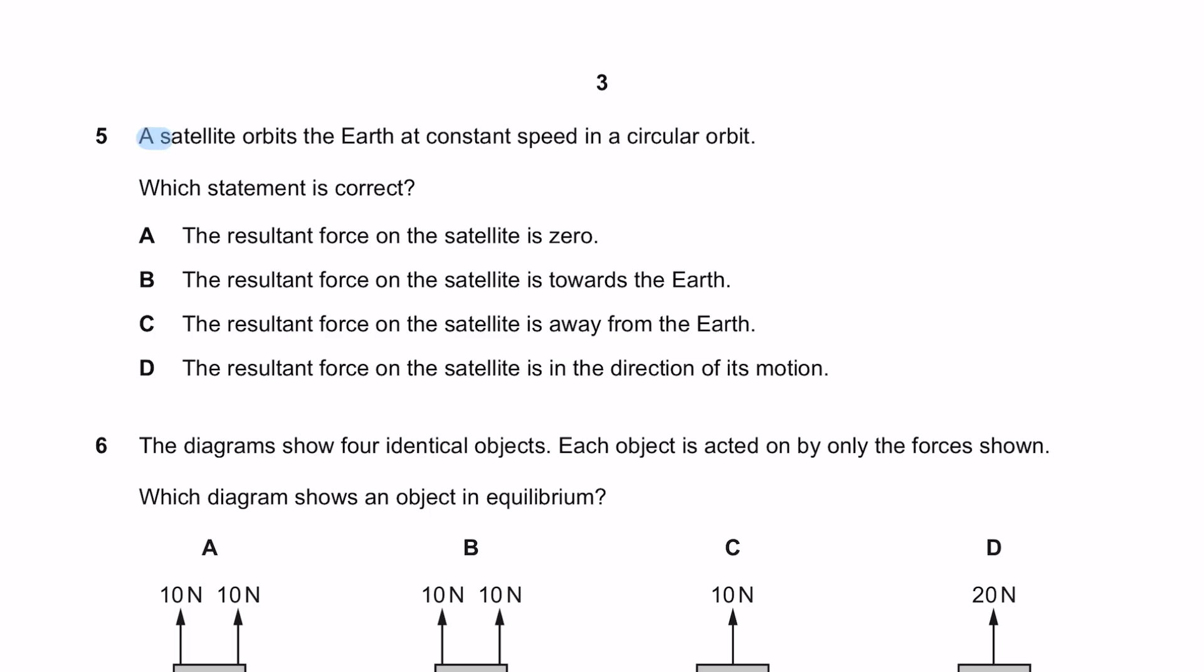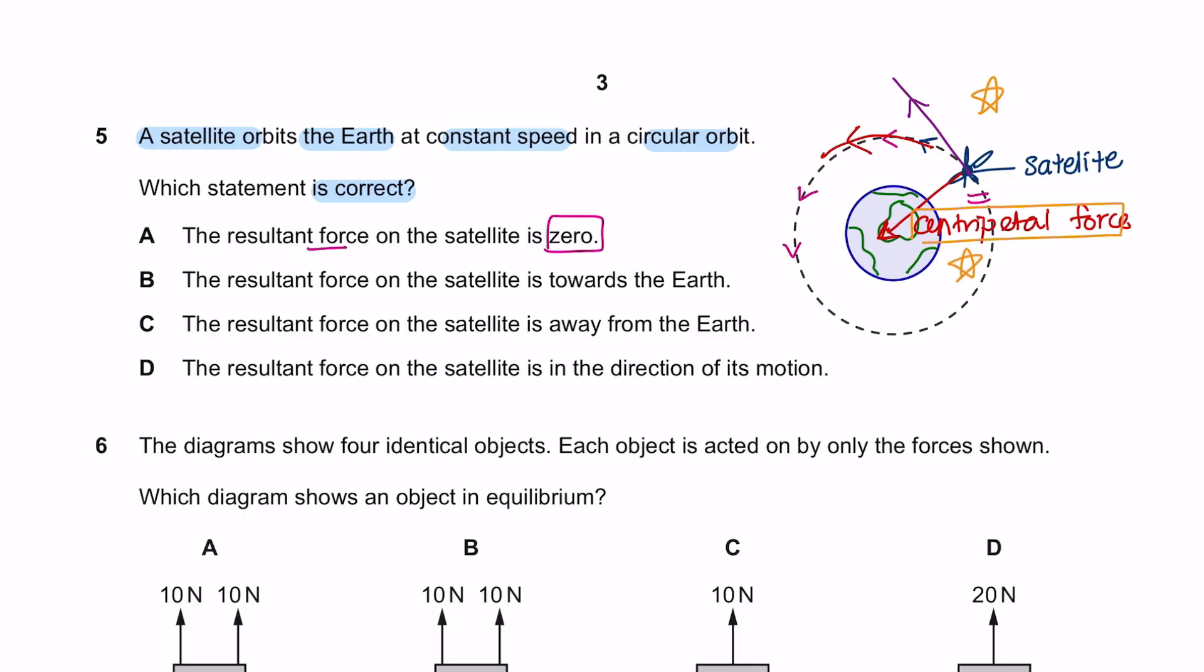Question 5. A satellite orbits the earth at constant speed in a circular orbit. Which statement is correct? When an object is moving in a circular motion, this means that there is some sort of centripetal force that is causing it to move in a circle instead of heading straight. So remember that for a circular motion scenario, the centripetal force here would be the resultant force. So the resultant force on the satellite is towards the earth. The answer is B.